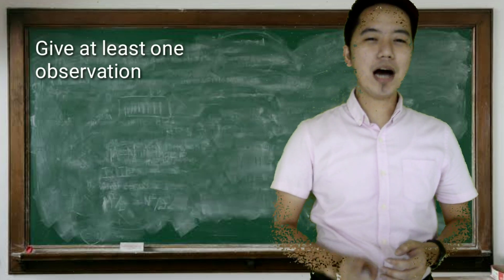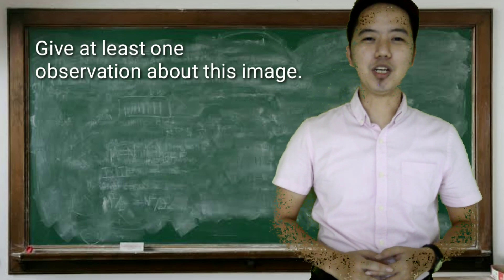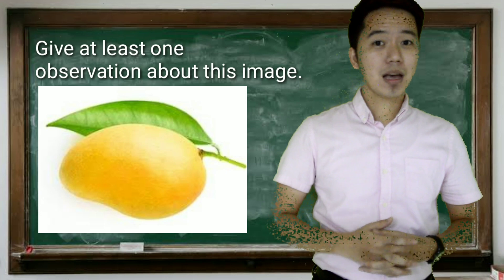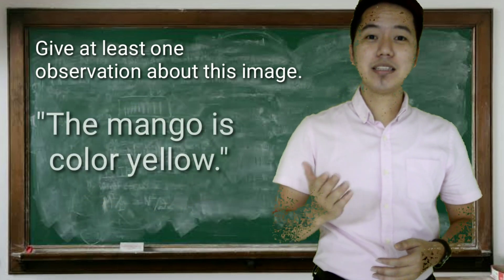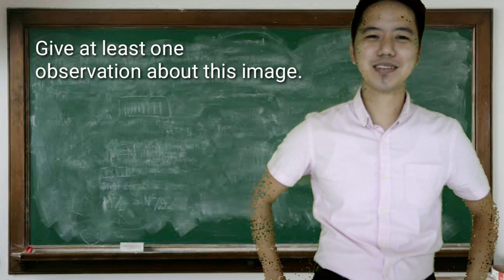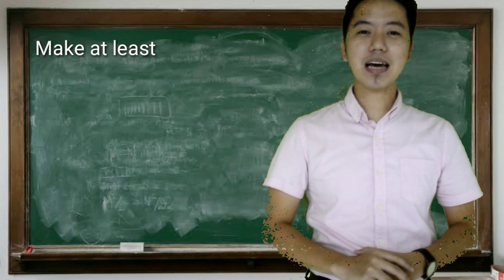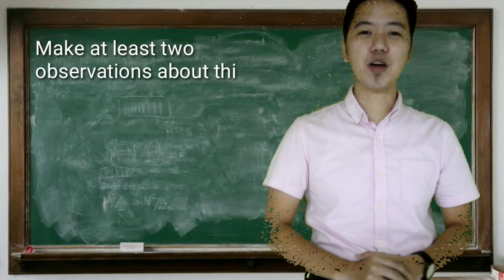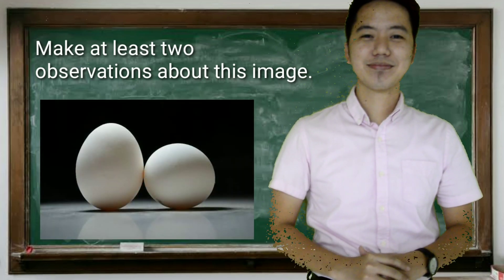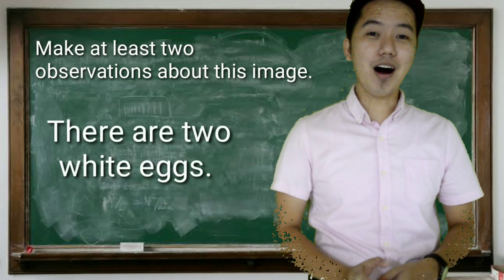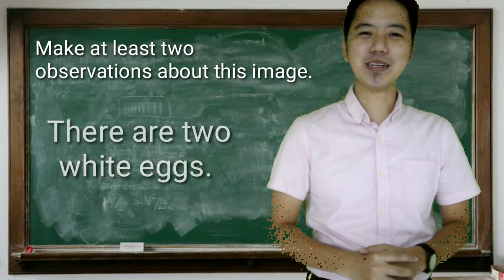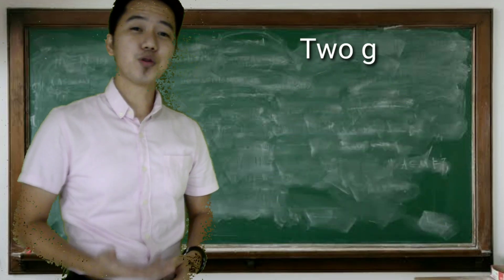Give at least one observation about this image. Did you just say the mango is color yellow? You are correct! Make at least two observations about this image. There are two white eggs — very good. There are two ways on how you will make an observation.